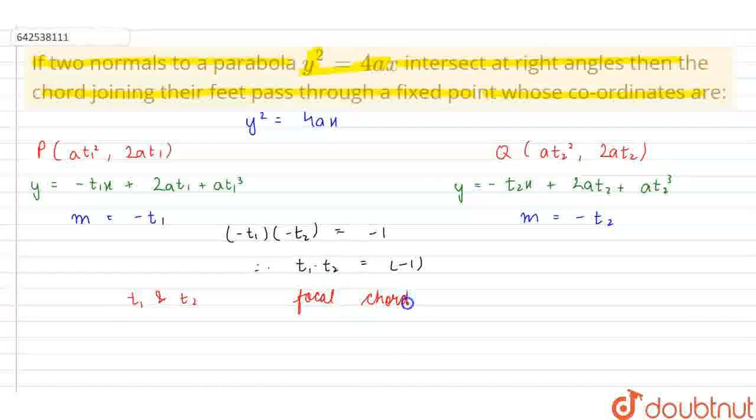So since they are the endpoints of a focal chord, therefore this chord must pass through the focus, and here the focus is (a, 0). So these are the required coordinates of the point.